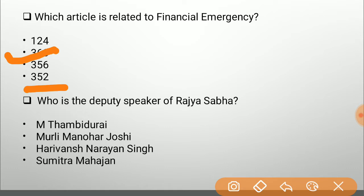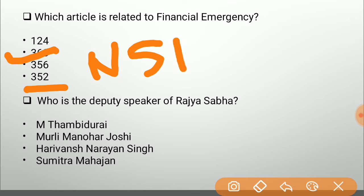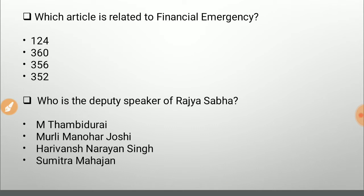A quick way to remember: these three articles related to emergency — 352, 356, and 360 — each successive pair has a difference of four between them. Article 352 is national emergency (N for national), 356 is state emergency (S for state), and 360 is financial emergency (F for financial). So NSF: 352, 356, 360. The answer is Article 360, related to financial emergency.